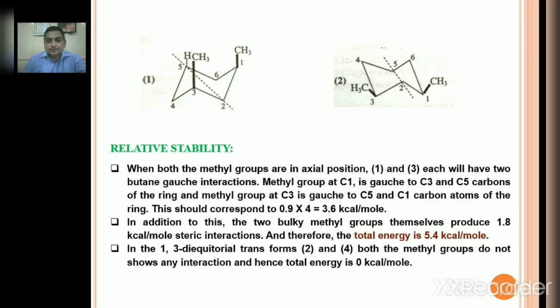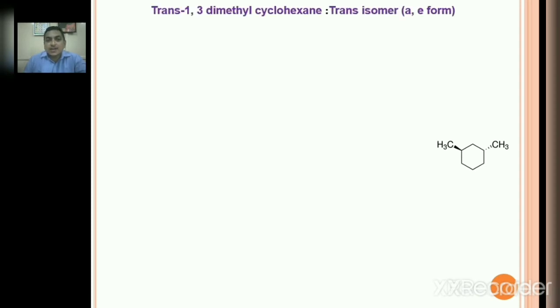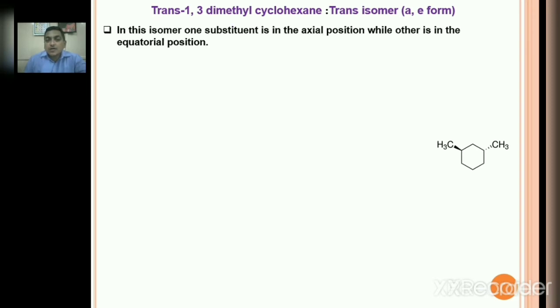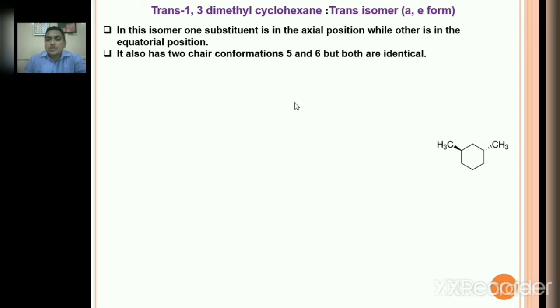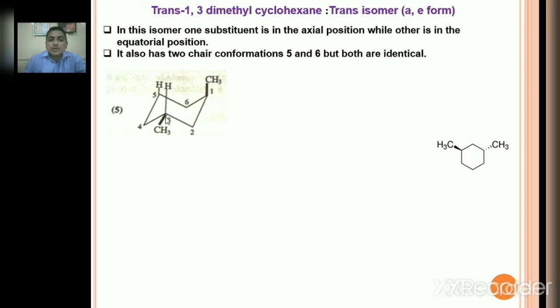Let us now discuss the trans isomer. This is trans-1,3-dimethylcyclohexane. In trans-1,3-dimethylcyclohexane, one substituent is axial while another substituent is at equatorial position. This compound also shows 2 chair conformations, but both conformational isomers are identical. In conformation 5, methyl at carbon 1 is axial and methyl at carbon 3 is equatorial — methyl is up at C1 and down at C3, opposite sides, hence trans isomer.